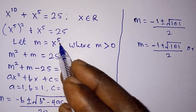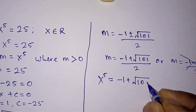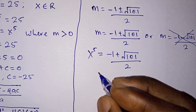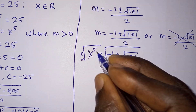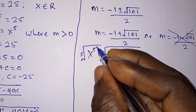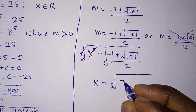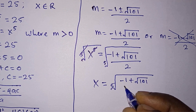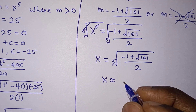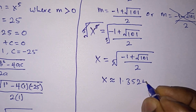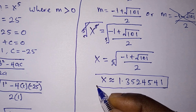From our substitution, m equals x to the power 5. So we have x to the power 5 equals negative 1 plus square root of 101, divided by 2. We are looking for x, so let's take the 5th root on each side. Since the power is 5, we do not need to introduce plus or minus. So x equals the 5th root of the quantity negative 1 plus square root of 101, all divided by 2. Using a calculator, x is approximately equal to 1.3524541 — the only real solution.